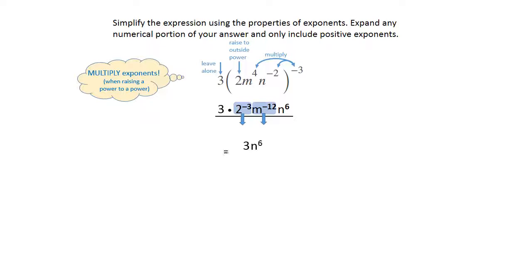That leaves the 3 and n to the 6th power in the numerator, and now you have 2 to the positive 3 and m to the positive 12 in the denominator.